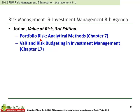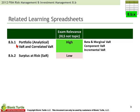Portfolio Risk Analytical Methods contains a few key metrics like Marginal VAR, Component VAR, and Incremental VAR. It's brief but dense. And then VAR and Risk Budgeting in Investment Management, Chapter 17. There is one learning spreadsheet associated with each chapter: 8B1 is a worksheet that summarizes each of those concepts of Portfolio VAR in Jorion, and 8B2 illustrates the surplus at risk, which is probably the key metric in Jorion's Chapter 17.